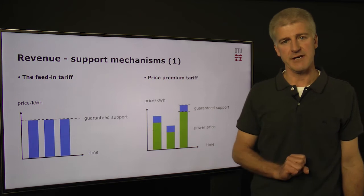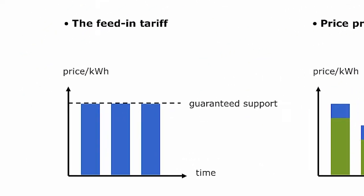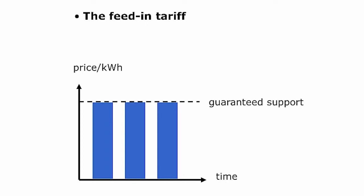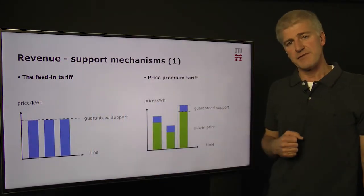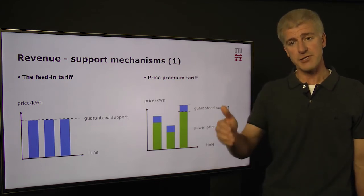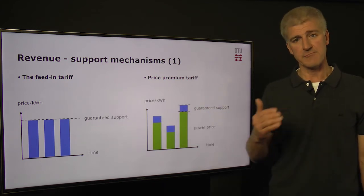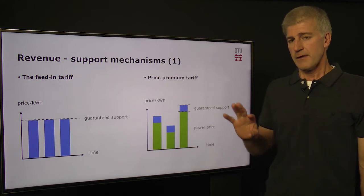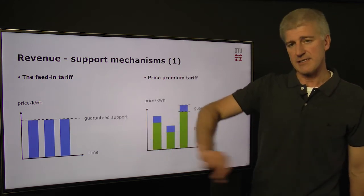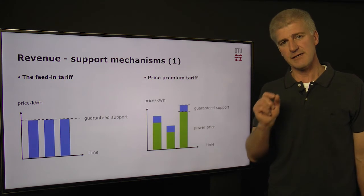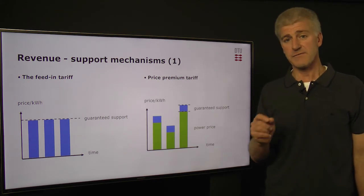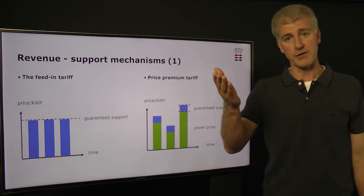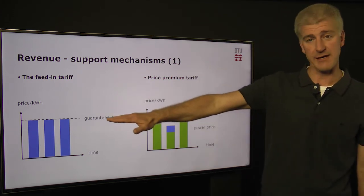The first one is the feed-in tariff. It's very simple and has been used a lot. It means that we get a guaranteed support for each kilowatt hour or megawatt hour of electricity that we put into the grid. This gives investors good certainty of the future revenue from a wind farm, meaning they can make economic calculations with a good degree of certainty. The slight problem is that setting this level of support is a little bit tricky, and from a national perspective, we will almost always get more or less investment than we wanted depending on exactly where we place this level.